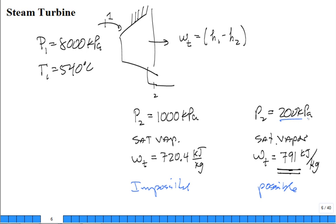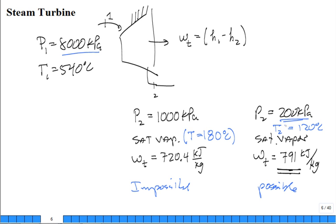You can get more work out if you go to lower pressure — but not arbitrarily. At 1,000 kPa, the saturation temperature is about 180°C. At 200 kPa, it's about 120°C. So the exit temperature for the possible case is 120°C. Sometimes the second law is not obvious at all, and that's precisely why we need it as a formal tool.